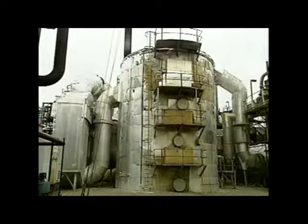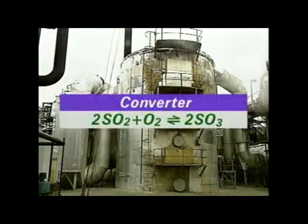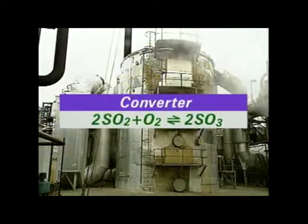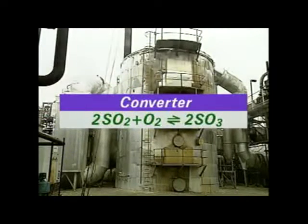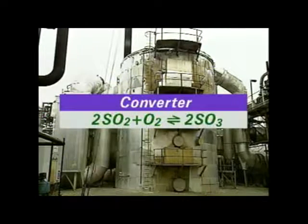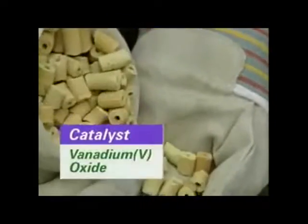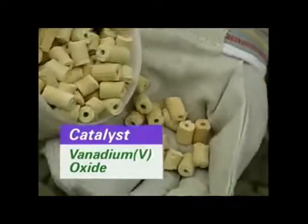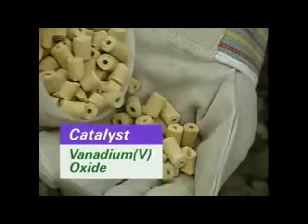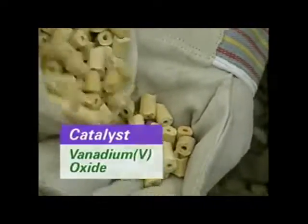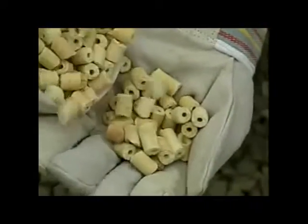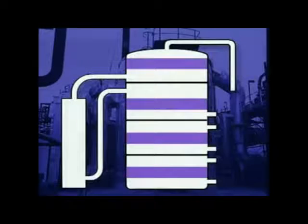In the converter, sulphur dioxide reacts with oxygen to produce sulphur trioxide. The reaction requires a catalyst, mainly vanadium pentoxide. This is most effective at 440 degrees Celsius. There are four beds of catalyst in the converter.